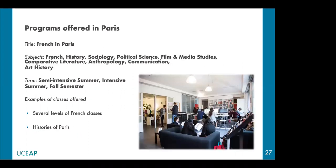The second option in Paris is French in Paris, ideal for students interested in learning the French language. It is available in the summer as semi-intensive or intensive, and in the fall semester. Students will be able to take several levels of French and other electives. One example of an elective offered in the past is History of Paris, where students learn about the rich history of the city and visit places such as the Louvre Museum.